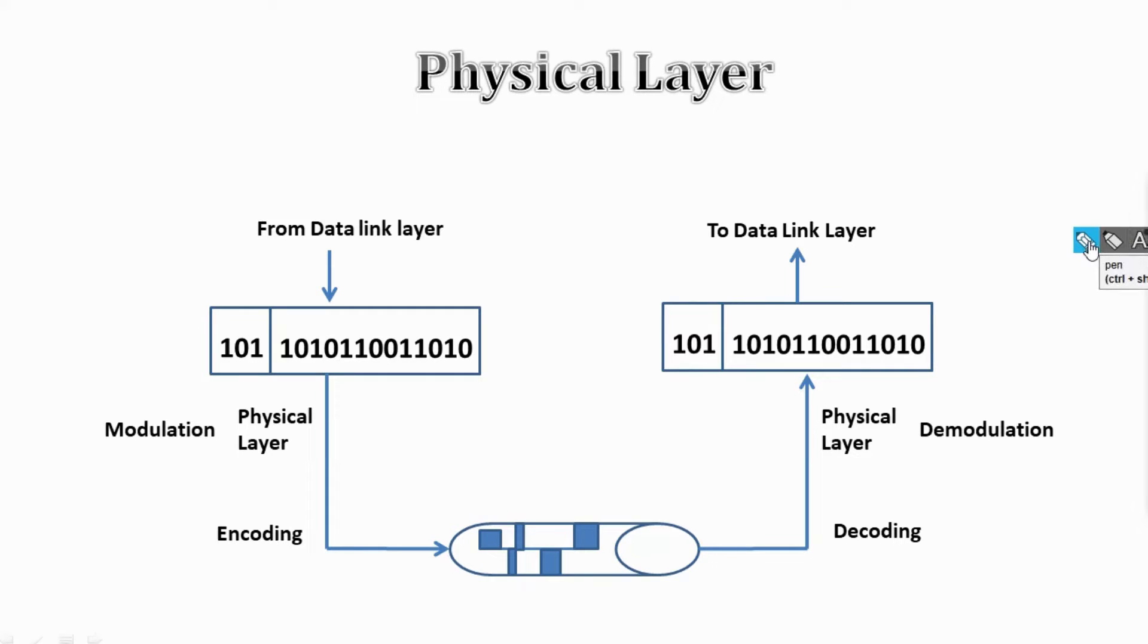First, a critical aspect of the physical layer is the concept of modulation and encoding. Modulation involves altering characteristics of the carrier signal to convey information, while encoding translates binary data into a format suitable for transmission over the medium.